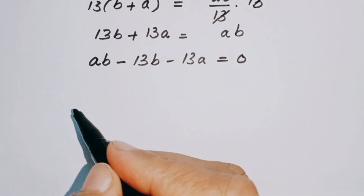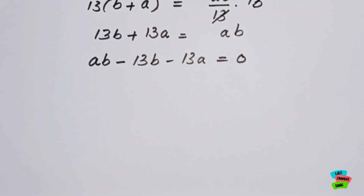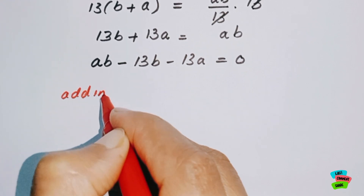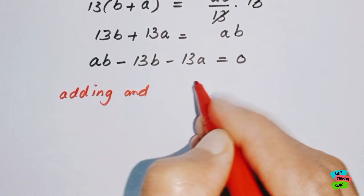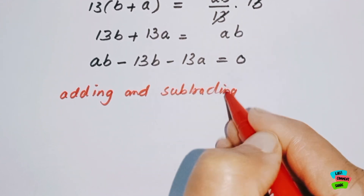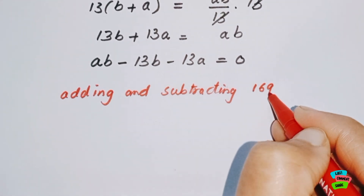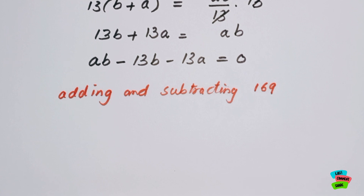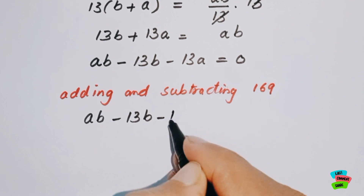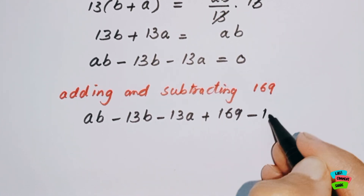Here we will add and subtract 169. So we write: ab minus 13b minus 13a plus 169 minus 169.